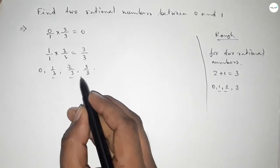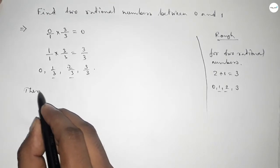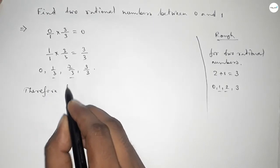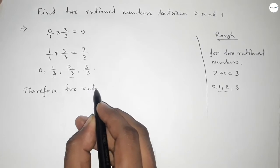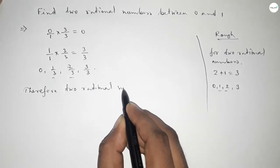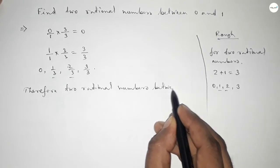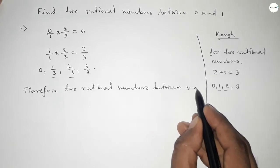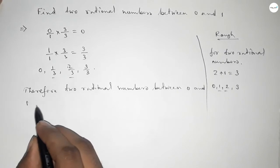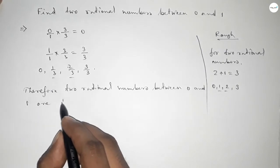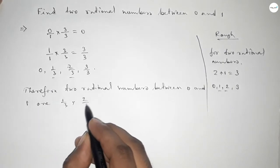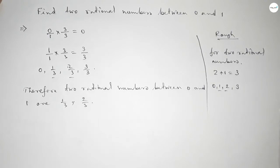Therefore, two rational numbers between 0 to 1 are first one is 1 over 3 or 1 one-third, and 2 over 3. So this is the process to find out two rational numbers between 0 to 1.